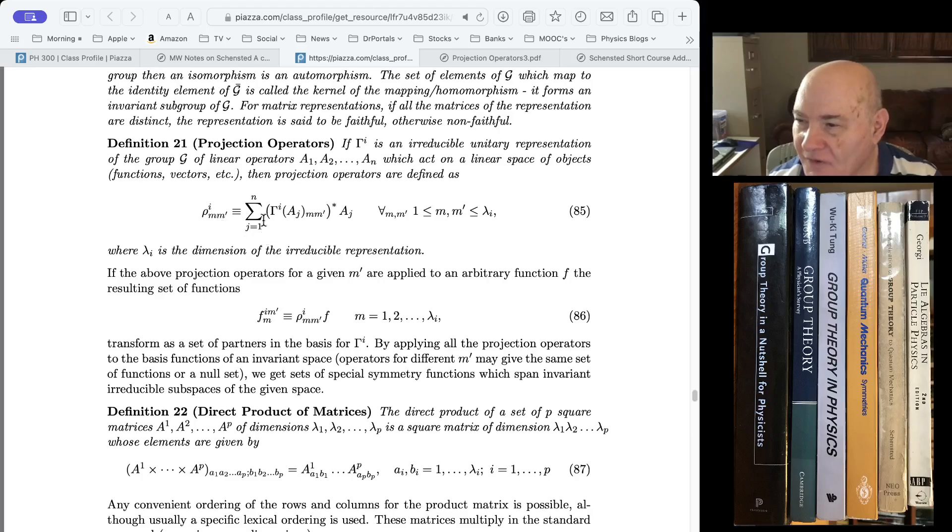So it's a sum of all the operators in the group. We take the irreducible representation that we're projecting, and we take its matrix elements, take the complex conjugates.